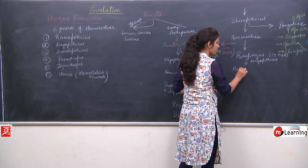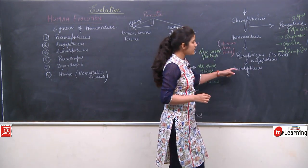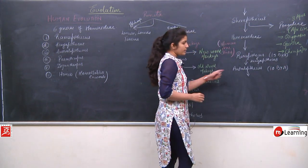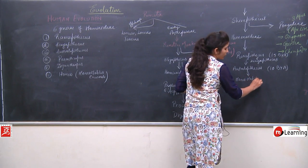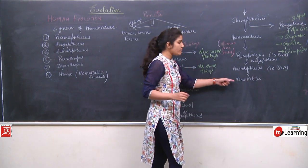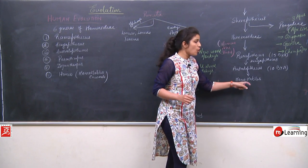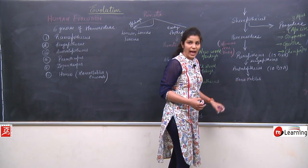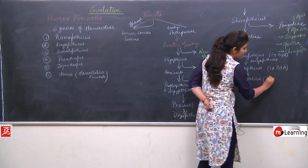The next link after Ramapithecus and Keniapithecus was Australopithecus, which evolved around 10 million years ago. After Australopithecus, the next link is Homo habilis. Homo habilis were also called handymen.